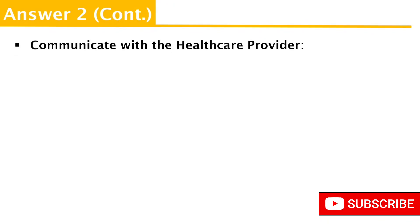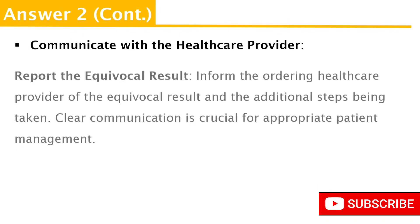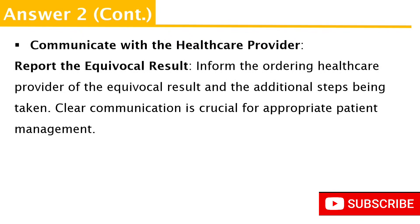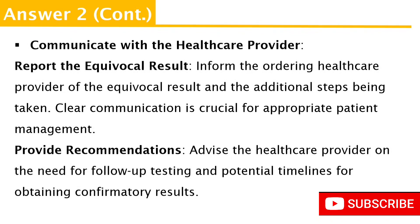After taking these steps, it is important to communicate each step taken to the clinician — the people providing healthcare to the patient. Communicating the results obtained and what actions have been taken helps them know how to manage the patient. Once you report the equivocal result and provide them with the information of what has happened, you can also recommend the next course of action, such as repeating the test in two days or a week's time.